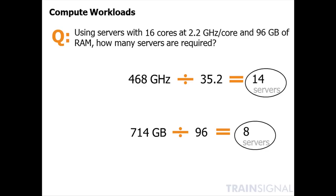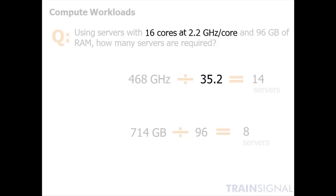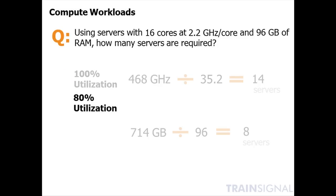That seems reasonable, but the problem is we've overlooked something. Those 16 cores at 2.2 gigahertz can only provide 35.2 gigahertz total capacity if we run at 100% utilization. Running at 100% utilization means our response times won't be acceptable. In addition, our total aggregate CPU capacity may not account for specific peaks in workloads — perhaps quarter-end or month-end peaks as Wired Brain processes all their sales reports. So we need to throttle that back, and instead look at 80% of each platform's capacity rather than 468 divided by 35.2.